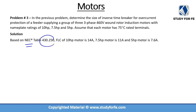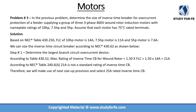Based on NEC table 430.250, FLCs are: 14 amps for the 10 horsepower motor, 11 amps for 7.5 horsepower, and 7.6 amps for 5 horsepower. Per NEC 430.62, this is a two-step process. Step 1 involves determining the largest branch circuit overcurrent device, which we did in the previous problem — it is 25 amps for the 10 horsepower motor, determined using table 430.52 and table 240.6(A).